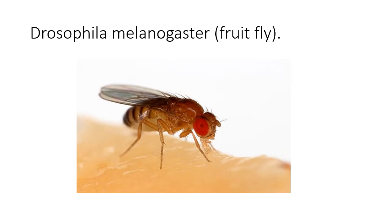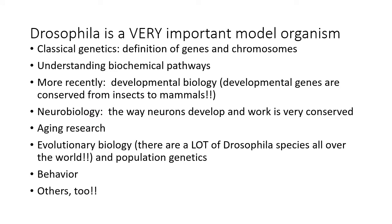Welcome to our favorite model organism, Drosophila melanogaster, which is a fruit fly. We're going to be talking about sexual development — at least some parts of the sexual development in those flies that take place in the early embryo. Drosophila is a very important model organism for classical genetics, a very early definition of genes and chromosomes, and an understanding of biochemical pathways. It's still very popular and important for things like developmental biology because of the high degree of conservation of developmental genes across metazoans.